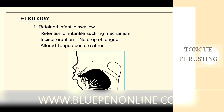Regarding the etiology behind tongue thrusting habit, one reason is a retained infantile swallow. The infantile swallow, which should normally shift to mature swallowing, if retained can result in a tongue thrusting habit. It can also be due to incisor eruption - normally the tongue should drop to adult swallowing with incisor eruption, but in some cases there is no drop and there is an altered tongue posture at rest.